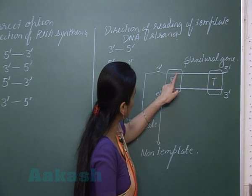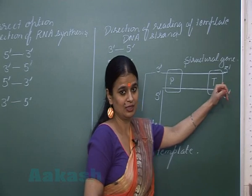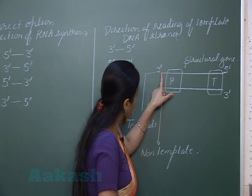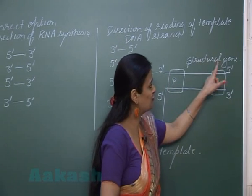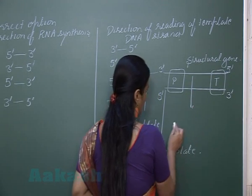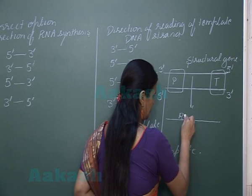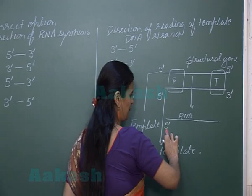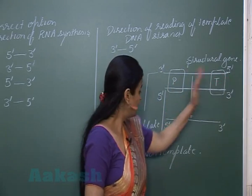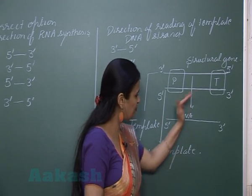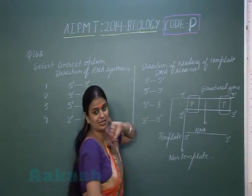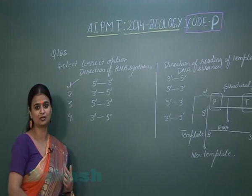The direction of reading of the template strand is 3' to 5'. The enzyme RNA polymerase binds at the promoter region and reads the DNA template strand from 3' to 5'. By reading the sequence on the template strand, it forms a complementary RNA. RNA is synthesized in the direction 5' to 3'. So the direction of reading of template DNA is 3' to 5', and the direction of RNA synthesis is 5' to 3'. This is the correct option for the transcription process.